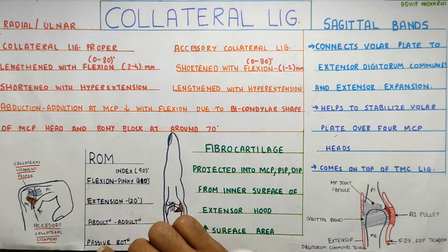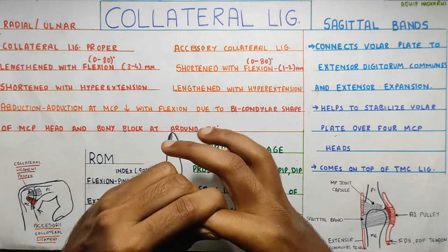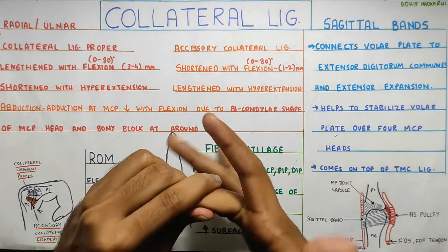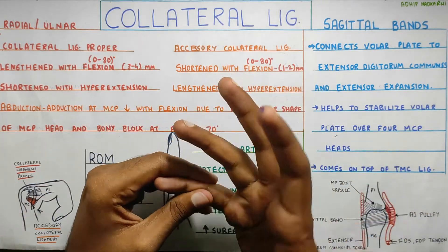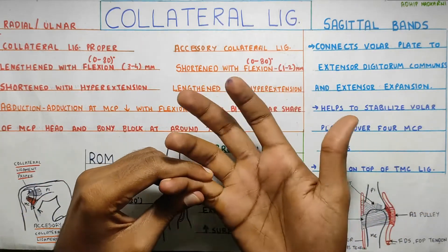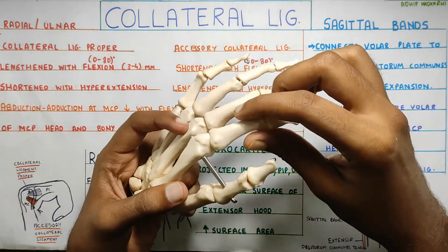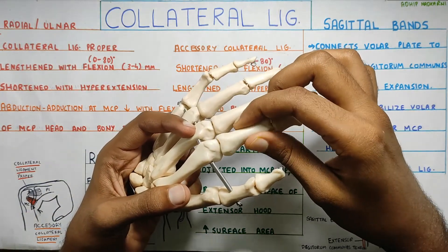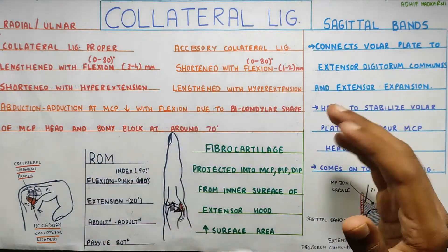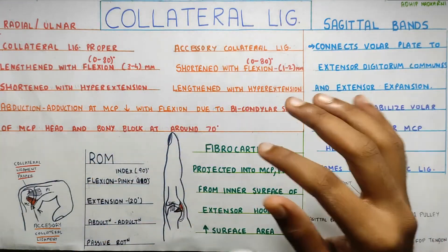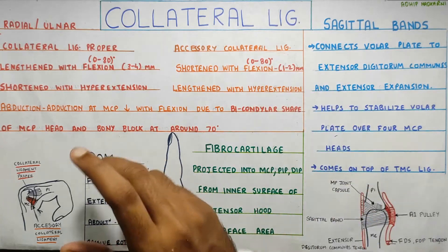There is also something called passive rotation at the MCP joint. Although we cannot do it actively, it is possible passively. This slight rotation helps in moving the hand into different positions, and that is its function.